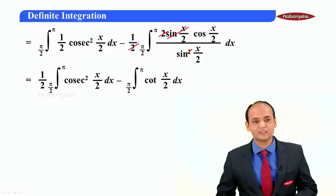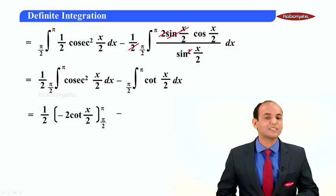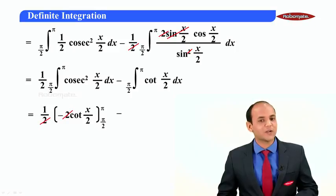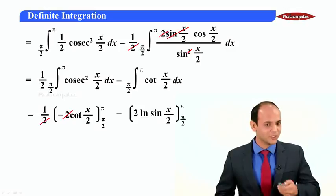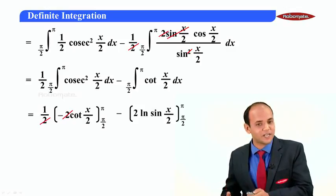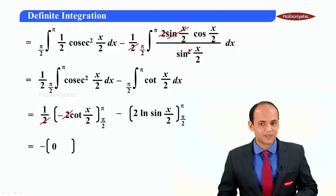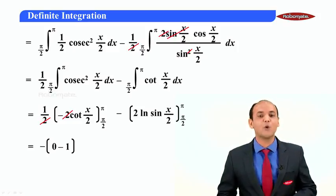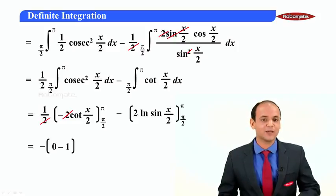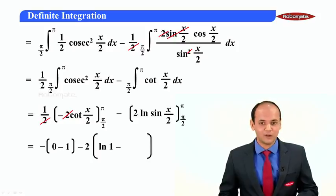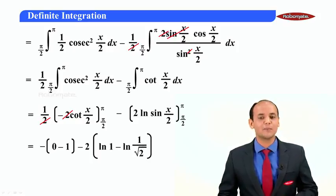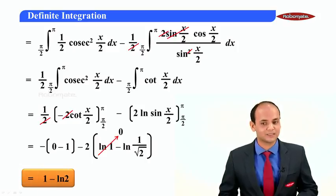The integral of cosec²(x/2) is −cot(x/2) / (1/2), and the integral of cot(x/2) is ln|sin(x/2)| / (1/2). Substituting the limits π/2 to π: for the first part, it becomes cot(π/2) = 0 minus cot(π/4) = 1; for the second part, ln|sin(π/2)| = ln 1 = 0 minus ln|sin(π/4)| = ln(1/√2). Simplifying, ln 1 = 0 and the final answer is 1 − ln 2. I hope students, you have understood the concept. Thank you.